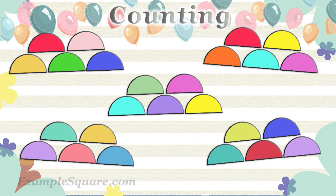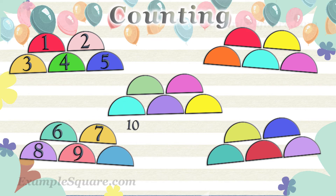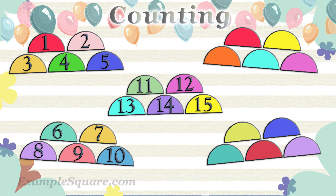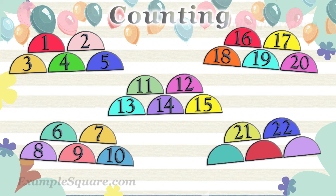How many semicircle chips are there? One, two, three, four, five, six, seven, eight, nine, ten, eleven, twelve, thirteen, fourteen, fifteen, sixteen, seventeen, eighteen, nineteen, twenty, twenty-one, twenty-two, twenty-three, twenty-four, twenty-five. There are 25 semicircle shapes.